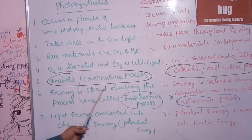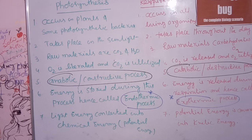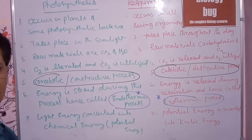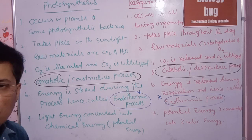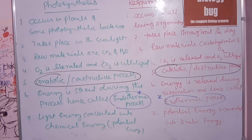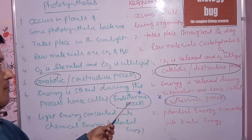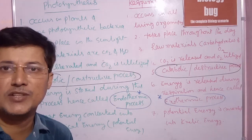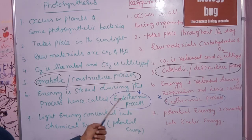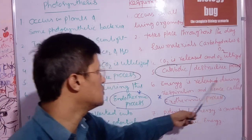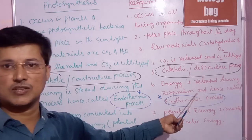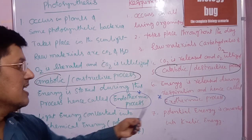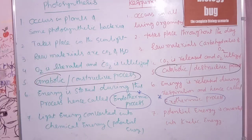Energy is stored during photosynthesis, hence it is called an endothermic process. In photosynthesis, energy is produced and stored — that's why it is endothermic. The energy is stored in ATP form. In respiration, energy is released — that's why it is called an exothermic process. Endothermic means energy is stored in; exothermic means energy is released out.